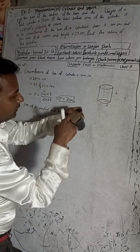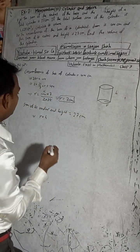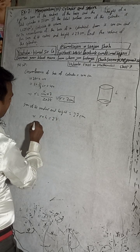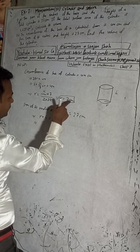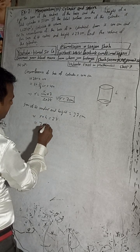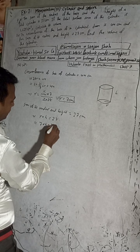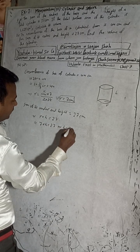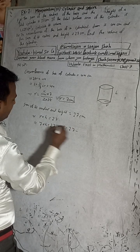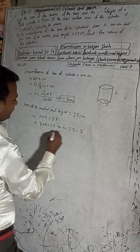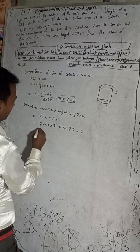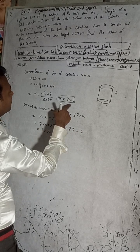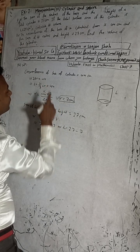The sum of radius and height is 27. Since r = 7, we have 7 + h = 27. This implies h = 27 − 7 = 20 cm.